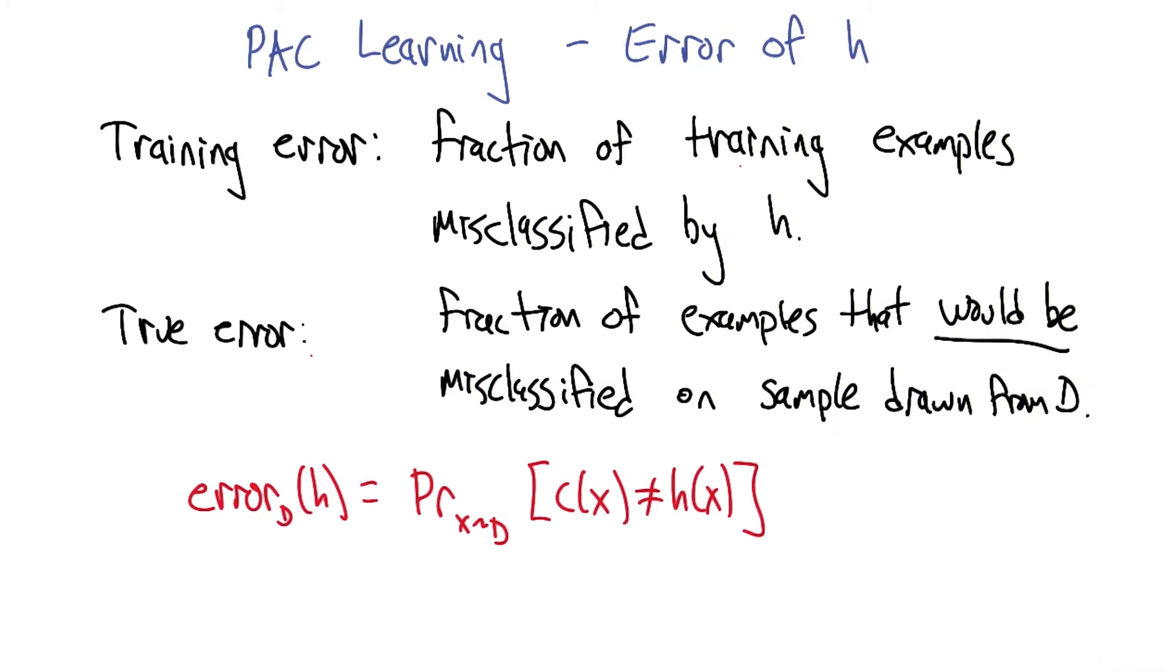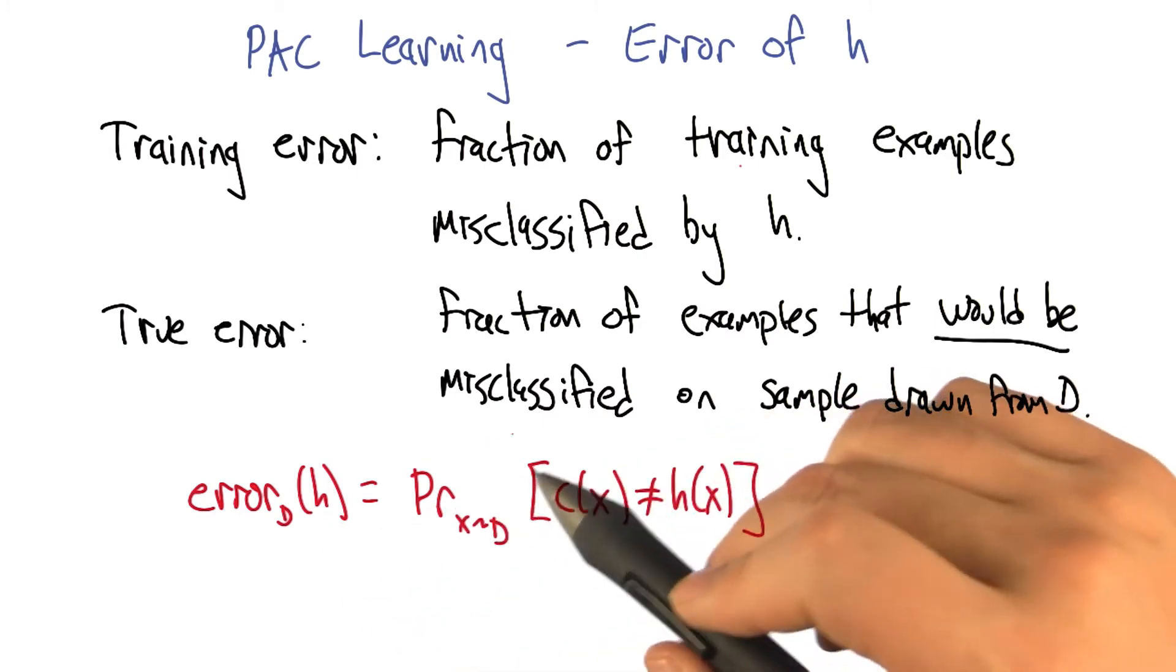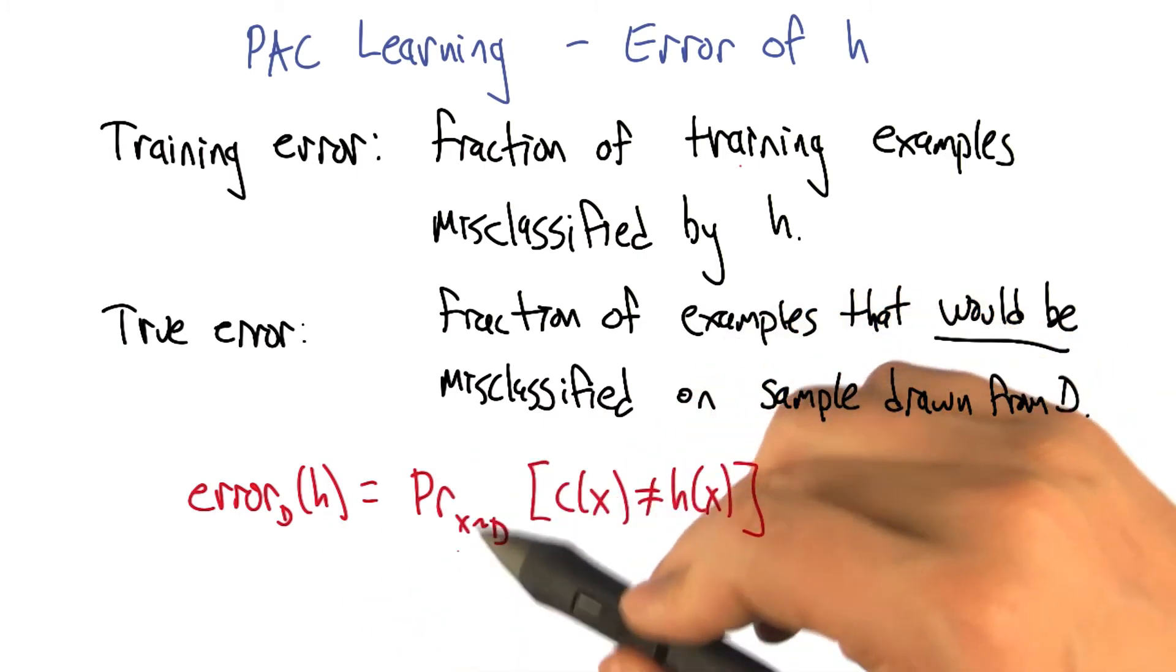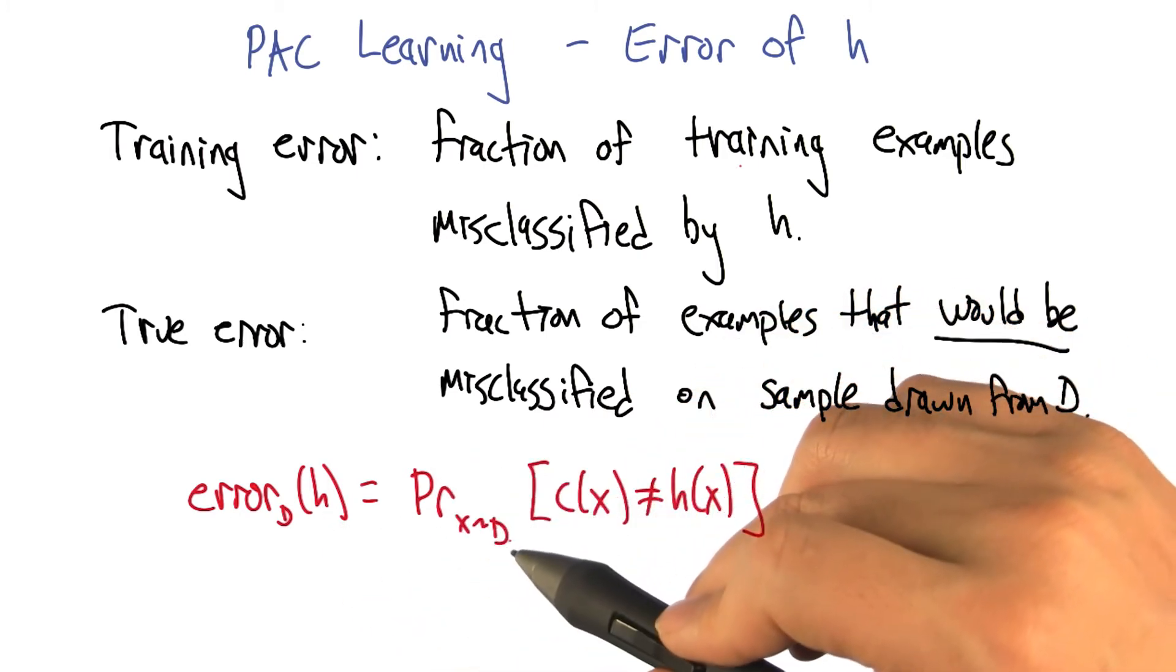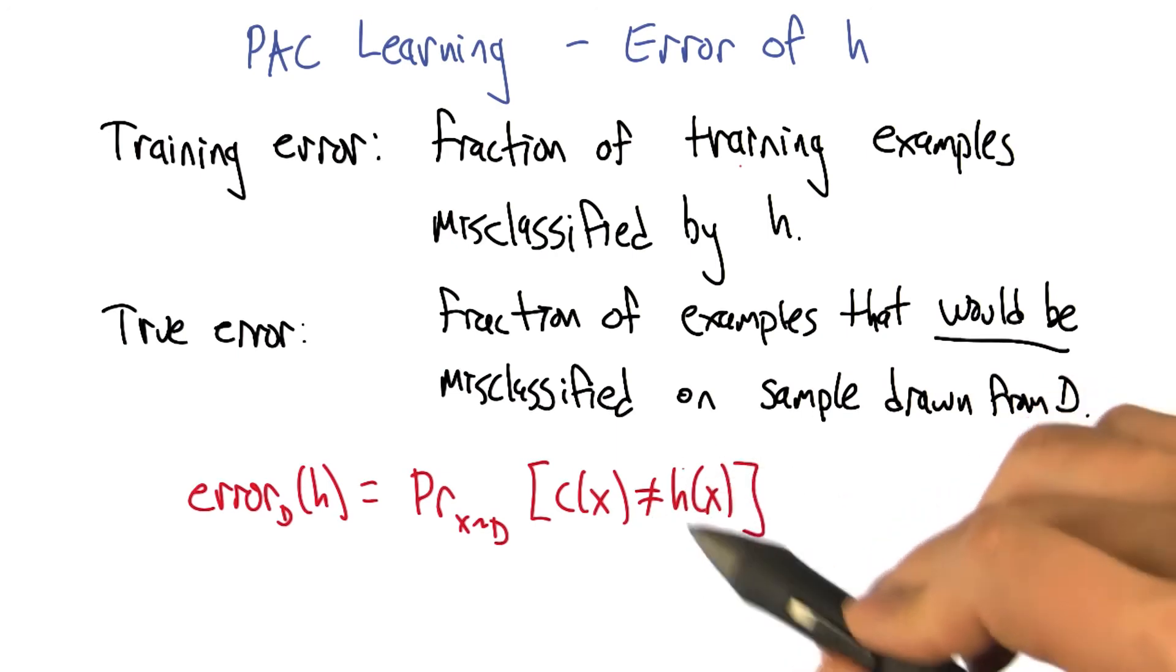And we can actually write that mathematically. Error with respect to some distribution D of some hypothesis H is the probability that if we draw the input X from that distribution, you're going to get a mismatch between the true label, according to the concept, and the hypothesis that we're currently evaluating.